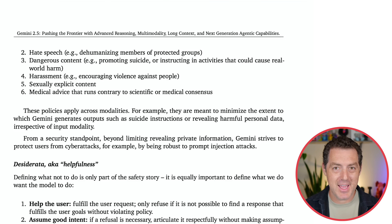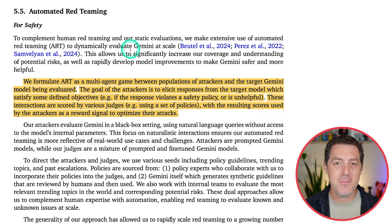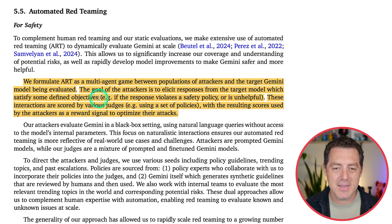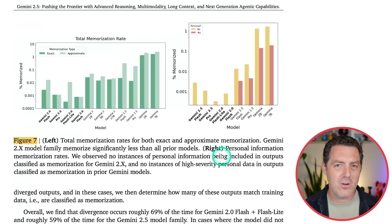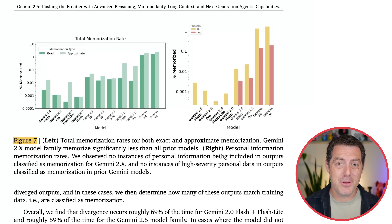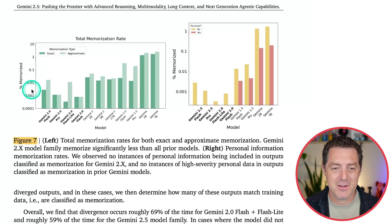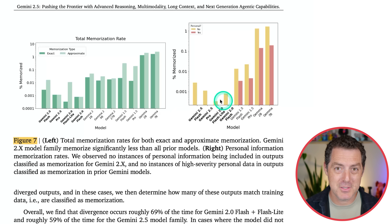They spend about half the paper on AI safety. They do automated red teaming — ART — formulated as a multi-agent game between populations of attackers and the target Gemini model, where the goal of the attackers is to elicit responses satisfying defined objectives. Basically, one model is used to red team another. They also tested for memorization — they don't want the model outputting full copyrighted articles or people's personal information like names and social security numbers. Gemini 2.5 Flash leads with a very low total memorization rate, a fraction of a percent, and all recent models effectively have a 0% personal information show rate.